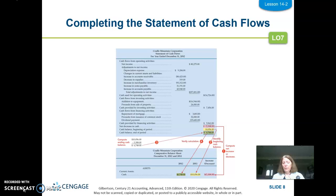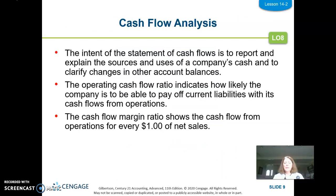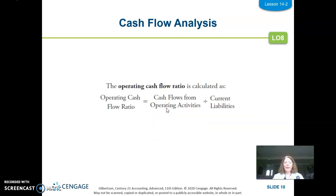But what good is it to finish the statement if we don't use it for analysis? Just know that for bigger companies with complexity — foreign currency translation, harder accounting transactions, other non-cash events — it gets more difficult. The intent is to report and explain the sources and uses of cash: why did our cash go down $3,308? The operating cash flow ratio indicates how likely they are to pay off current liabilities, and the cash flow margin ratio shows cash flow from operations for every dollar of net sales.